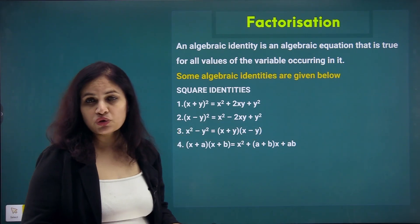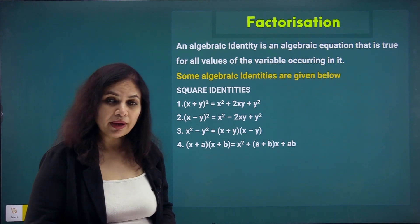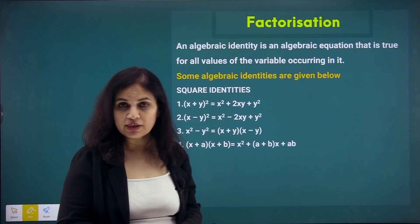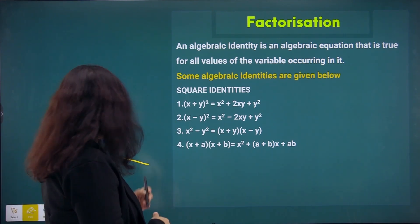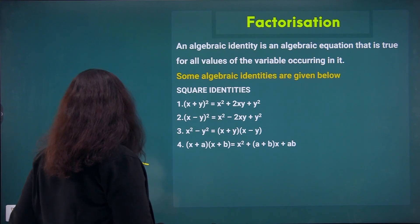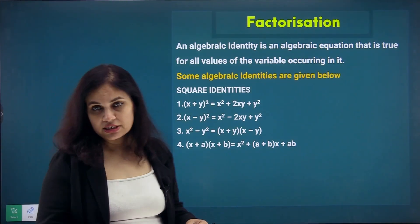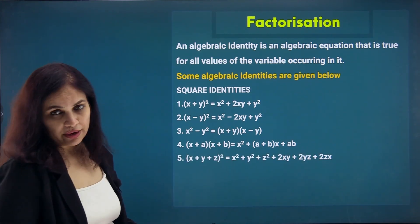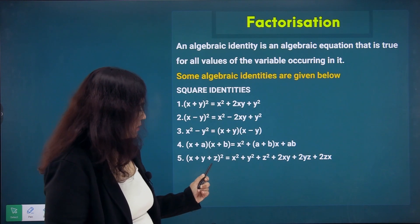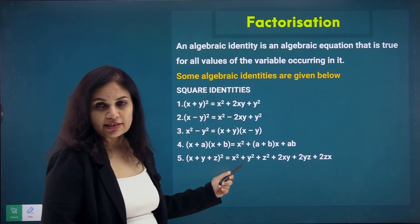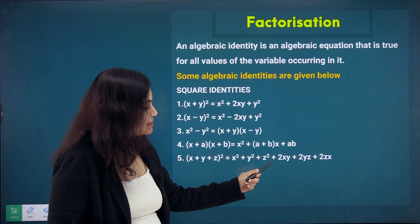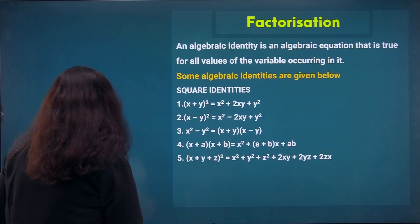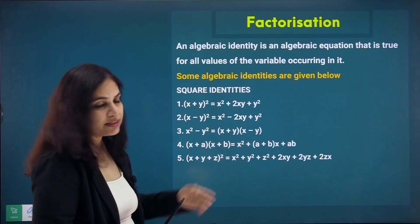We now discuss each square identity one by one, having seen their implication for faster and better calculation. Next, we will learn how to use these identities for factorization. The last identity is the extension of the first: (x+y+z)² = x²+y²+z²+2xy+2yz+2zx, which applies when we have three different terms.